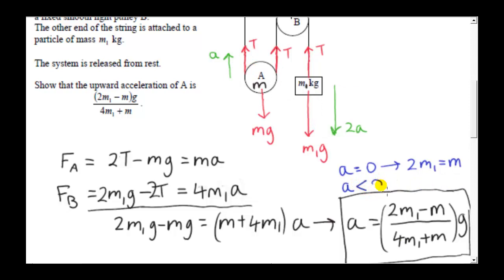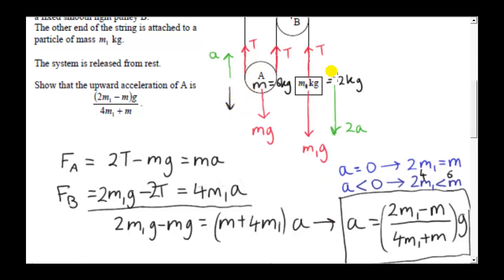When A is less than zero, A is negative, meaning the numerator is negative, so 2M₁ is less than M. For example, if M₁ is 2 kilograms and M is 6 kilograms, then 2 times M₁ equals 4, which is less than 6. In that case, A is negative and the system accelerates in the opposite direction — the pulley M moves down and mass M₁ accelerates up, because upward was taken as positive for the pulley.